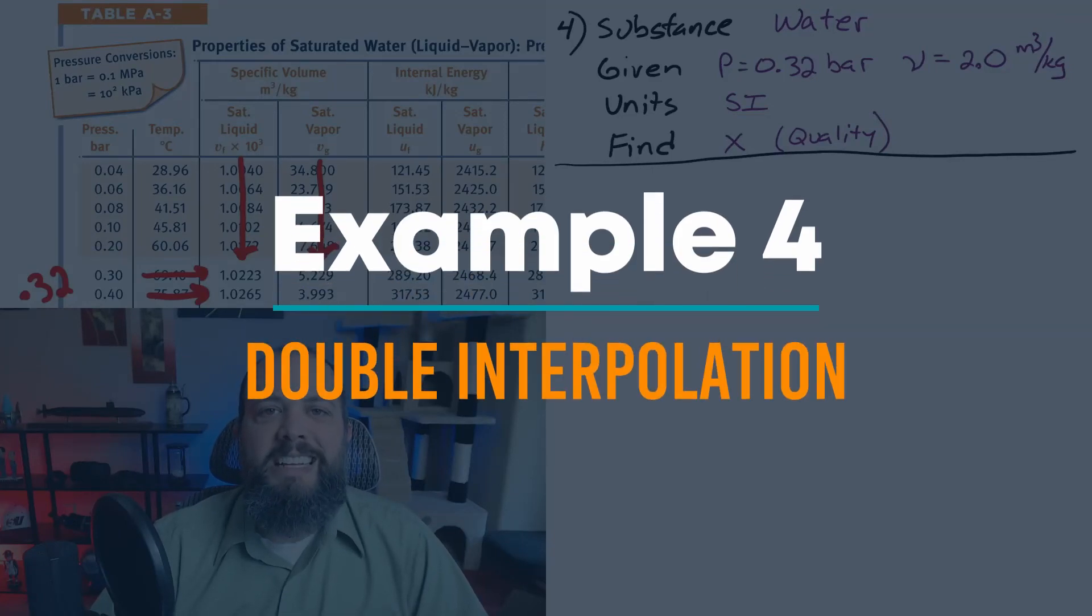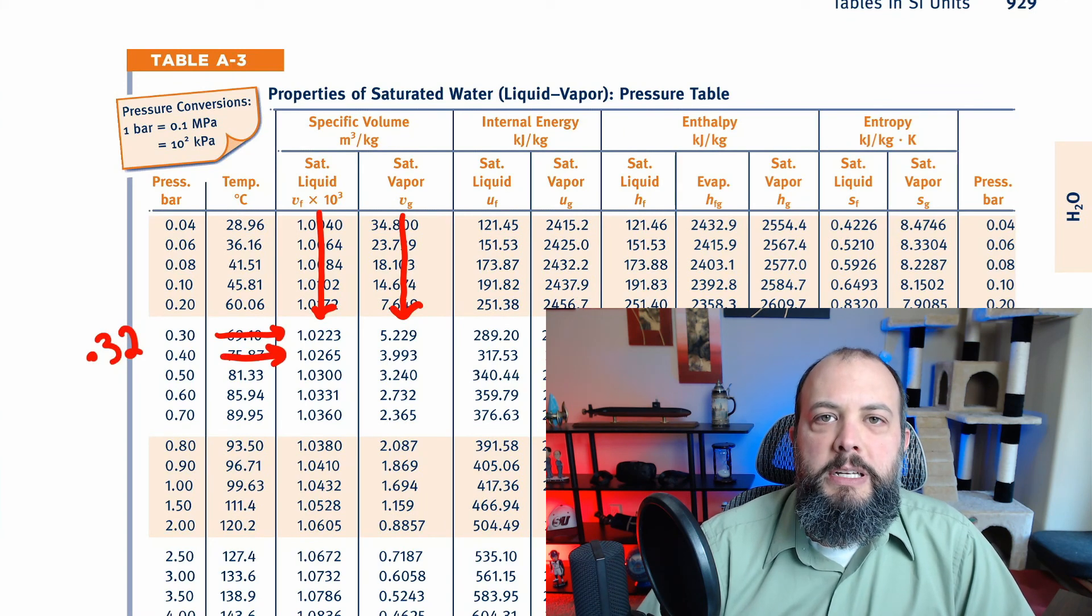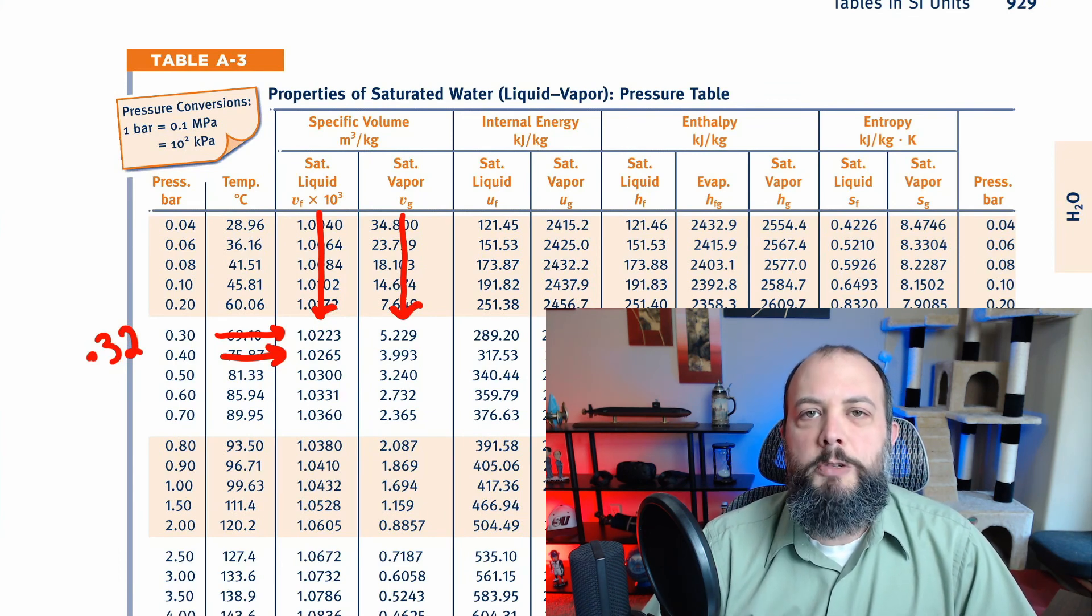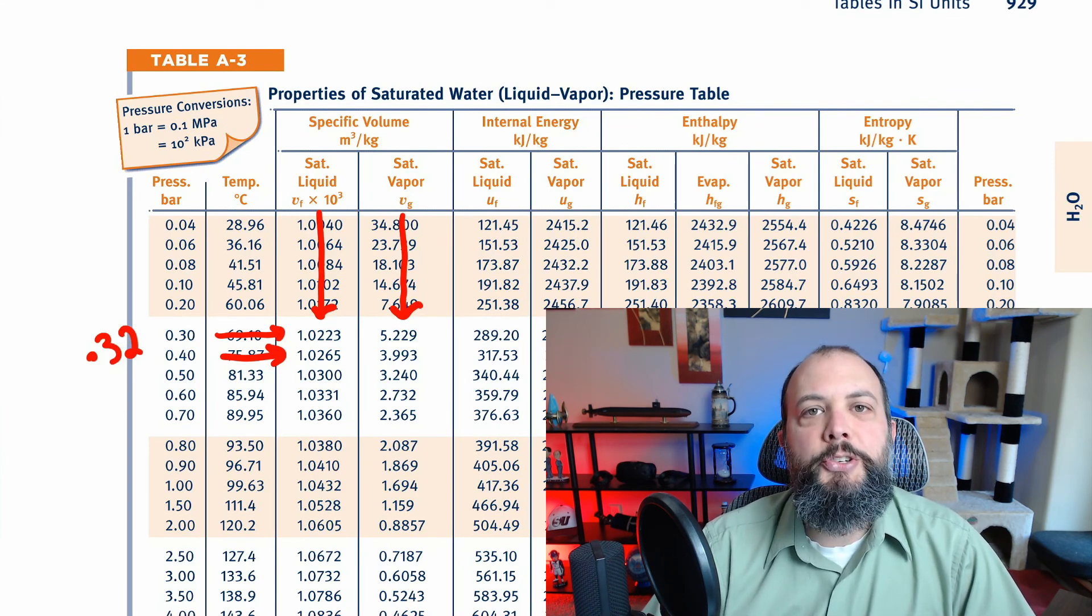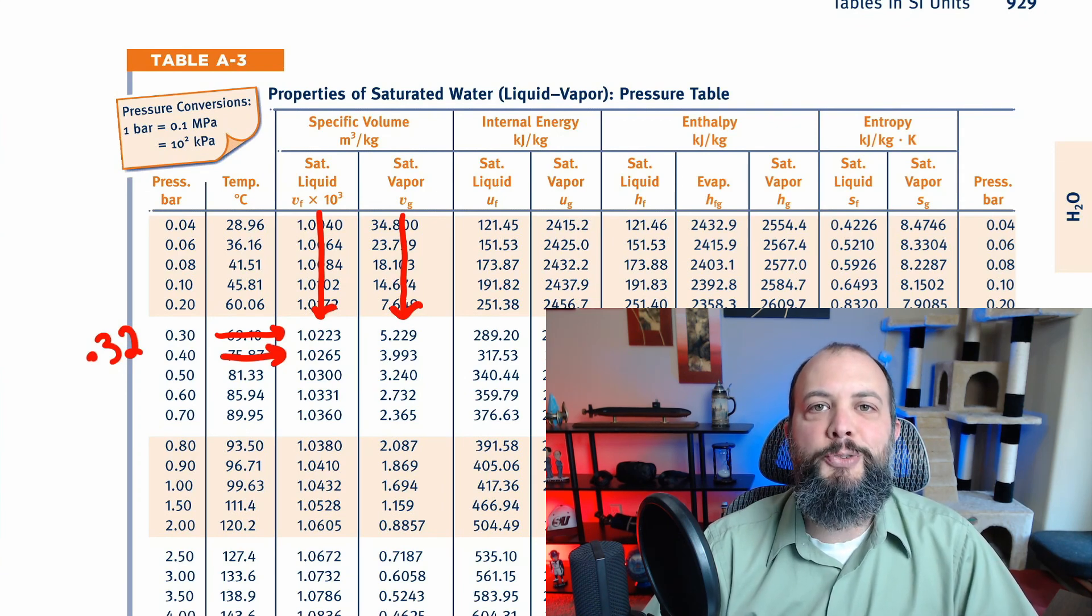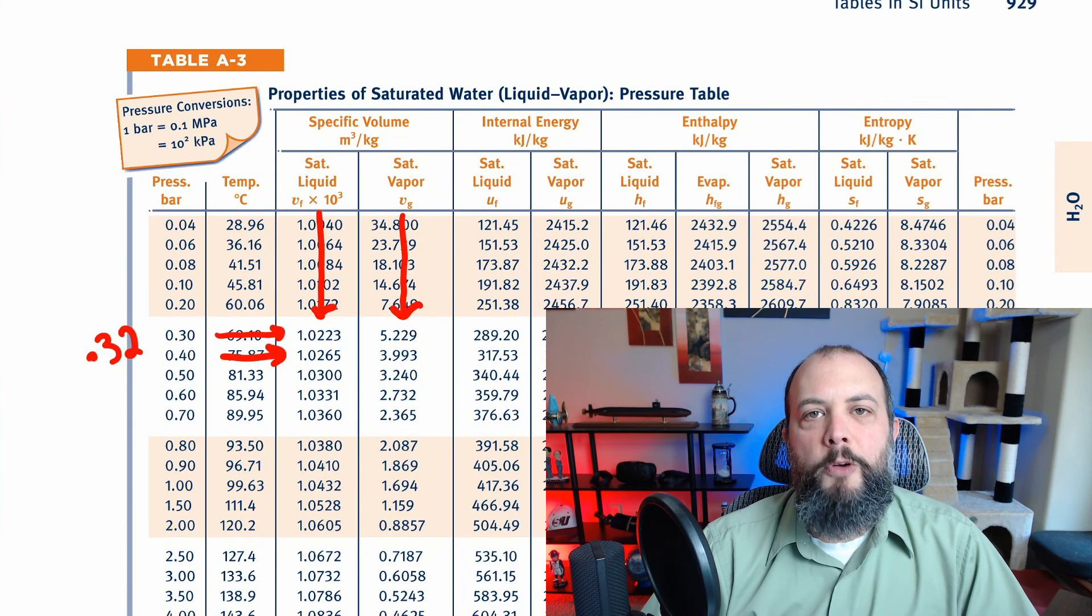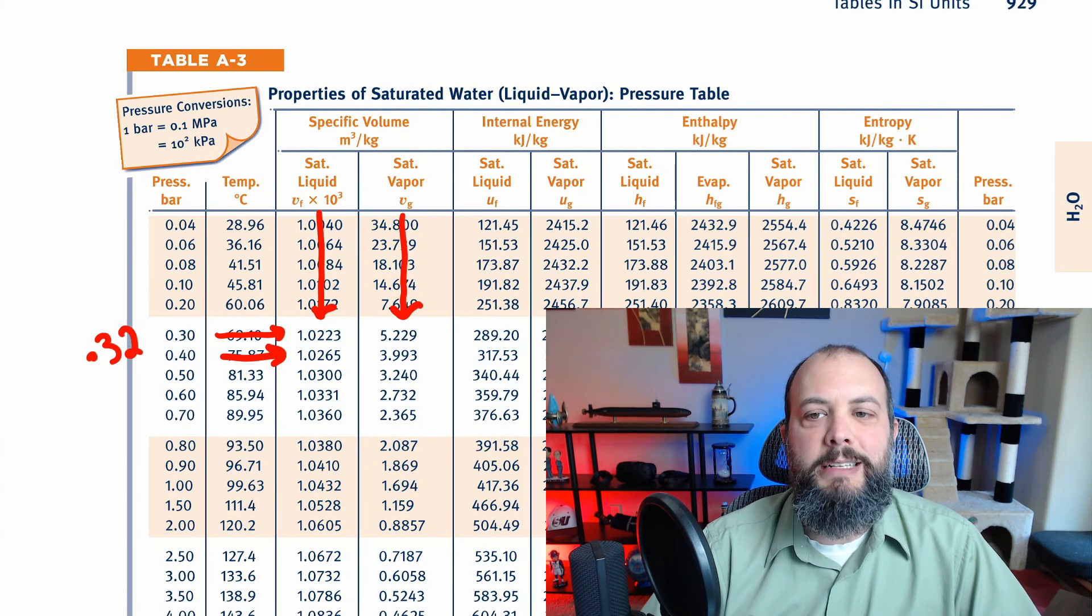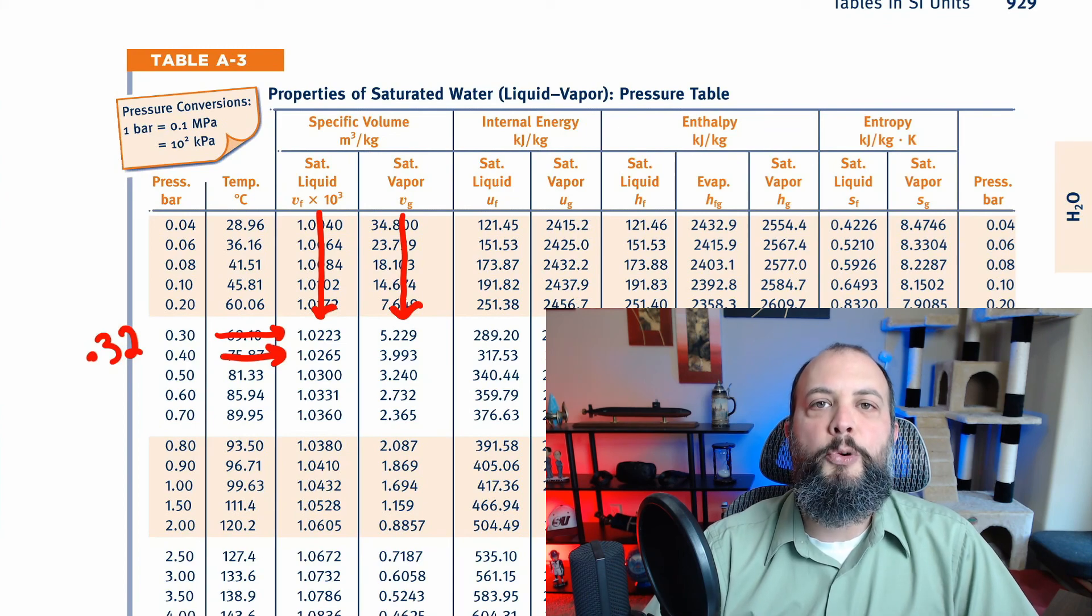Example four, we're given water and in SI units and we're provided with pressure and specific volume. This takes us to table A-3. And unfortunately, this is probably the most tedious case that you'll see where because the pressure value that you're given falls in between two different rows and you also have to find quality which means that your value is in between the saturated liquid and the saturated gas. So this is going to be a double interpolation problem where first we're going to do vertical interpolation twice for both the saturated fluid and the saturated gas. And then once we've found those two values, then you'll do a horizontal interpolation in order to solve for quality.